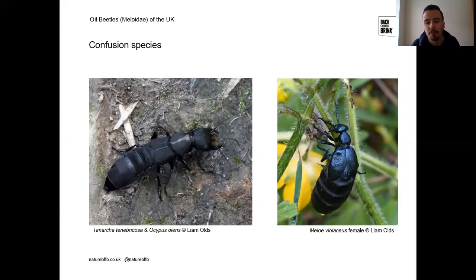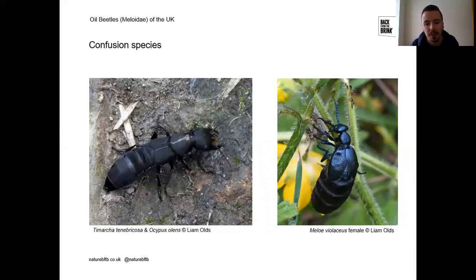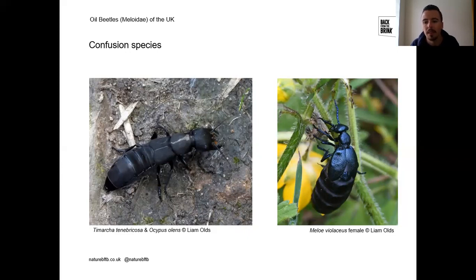A more convincing confusion species is the devil's coach horse beetle. As a rove beetle or staphylinid, it has short wing cases, so much of its abdomen is exposed — similar to oil beetles. However, it has large jaws as it's a predatory beetle, which are not present in oil beetles. It also exhibits different behaviour: it curls its abdomen upwards like a scorpion as a threat posture, which you'll never see in oil beetles. Its abdomen also isn't swollen in the same way.